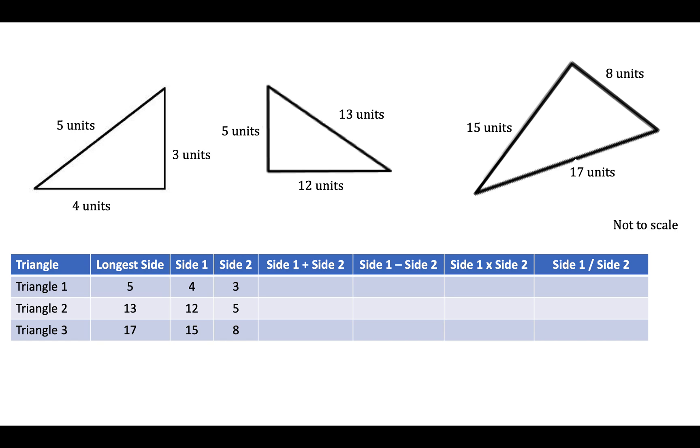Let's try that for sides one and two and see if there's a relationship between those two sides and the longest side. For triangle one, if I add sides one and two together I get 7. If I subtract them I get 1, multiplying them I get 12, and dividing them, 4 divided by 3 is 4/3 or 1.3 recurring.